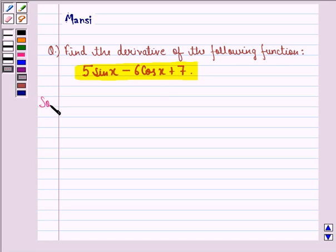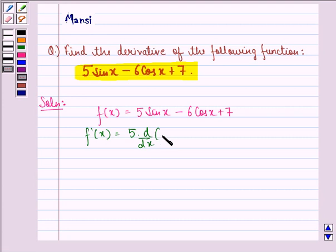Let us start with the solution to this one. f(x) given to us is 5 sin x minus 6 cos x plus 7. f'(x) will be 5 into d by dx of sin x minus 6 into d by dx of cos x plus 7 into d by dx of 1.